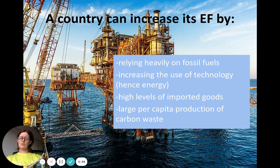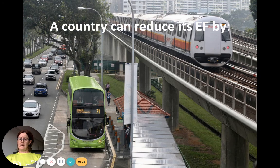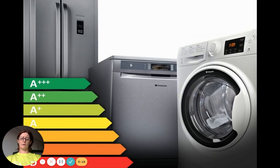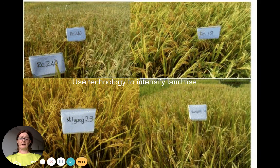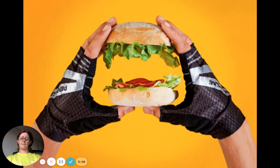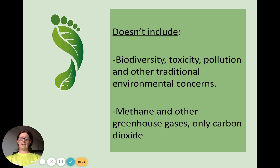As a country undergoes economic transition and industrializes, it may rely on fossil fuels, increase technology imports, produce more waste, and shift to a meat-rich diet — all of which increase the ecological footprint. What we can do to reduce it includes investing in public transport, renewable energy, recycling, energy-efficient appliances, and using technology such as the green revolution to intensify land use. We can also promote locally grown food and a meatless diet. It's relatively easy to calculate, though there are some limitations.